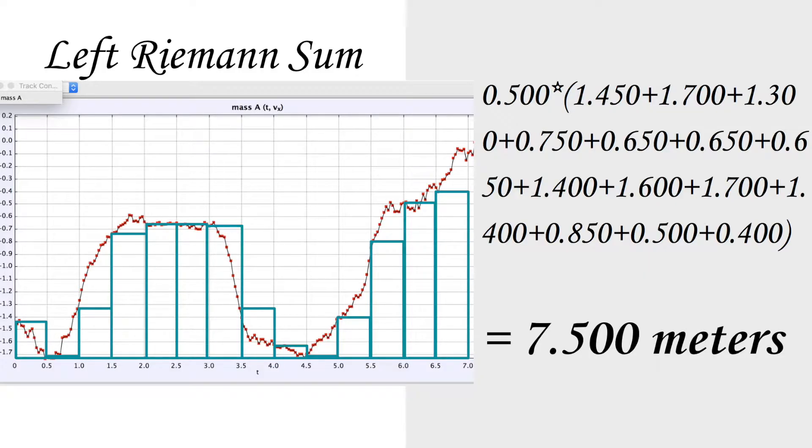Now, let's start to calculate the distance using left Riemann sum. For our Riemann sum, we'll have 14 equal subintervals of 0.5. This will be our base.